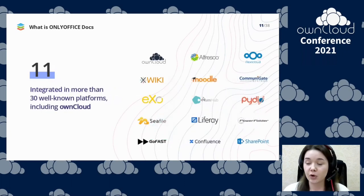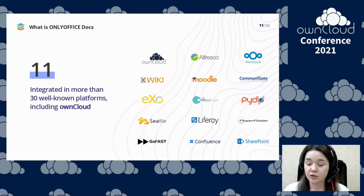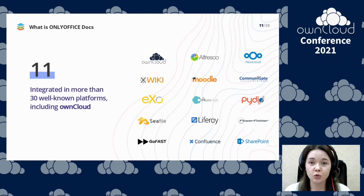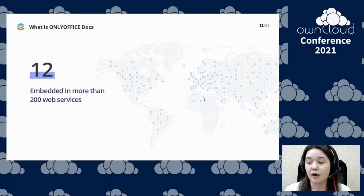OnlyOffice is integrated in more than 30 well-known and widely used platforms and cloud services. Our connector for OnCloud was our first official integration app — it allows you to create a full-featured customized working environment with online document collaboration, whether you are in the office or working from home. Our integration with OnCloud is in great demand, and OnlyOffice is also embedded in more than 200 web services by various developers all over the world.